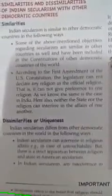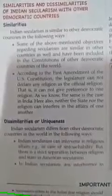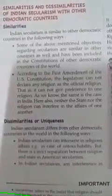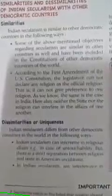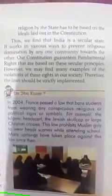Now the differences. First, Indian secularism can intervene in religious affairs in cases such as untouchability. There are many human rights considerations, and if there is a violation within a particular religion, the government intervenes. Second, in Indian secularism, any interference in religion by the state has to be based on the ideals laid out in the Constitution. The government will intervene only when something is against a constitutional provision.